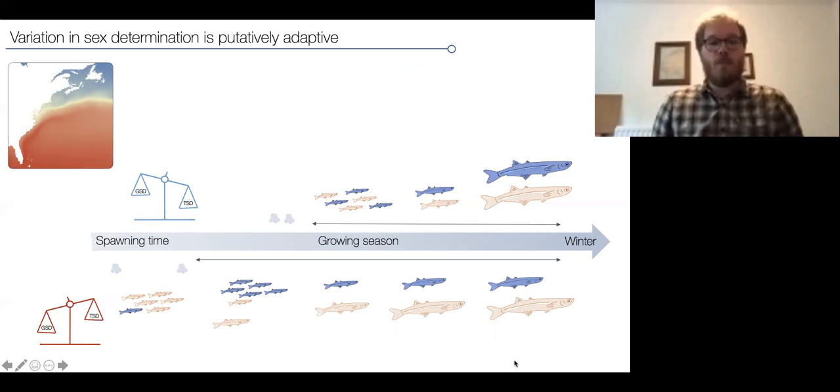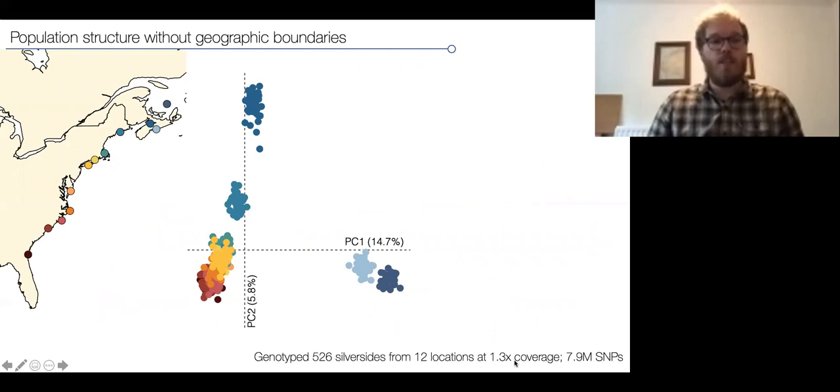We went out to use this system to understand what is the genetic basis underlying this variation in the temperature-sensitive phenotype. We went out, collected 12 populations along this range of spawning parasites, and genotyped them for about 8 million SNPs using a low coverage genome sequencing approach.